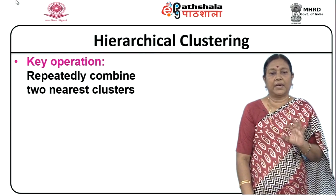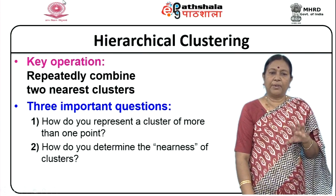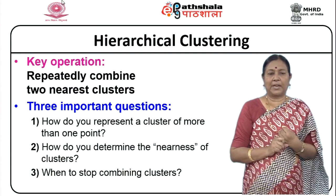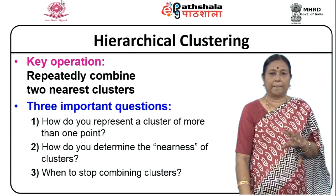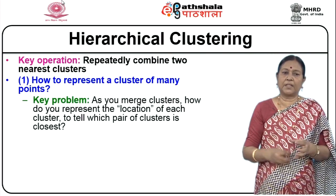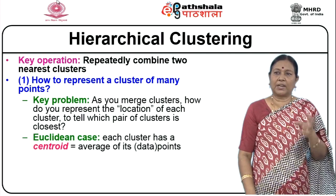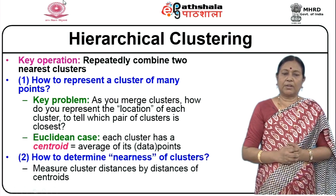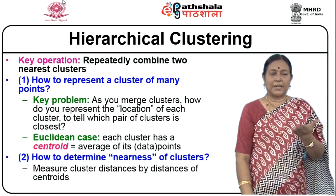The key operation is repeatedly combining the two nearest clusters. Three important questions must be answered: How do you represent a cluster of more than one point? How do you determine the nearness of clusters? When do you stop combining? For representation, each cluster can have a centroid — the average of its data points. For nearness, you can use the distance of centroids. In the non-Euclidean case, there is no average concept, so we use a clusteroid — an existing data point that is closest to all other points in the cluster.